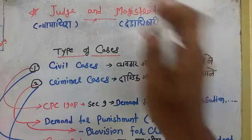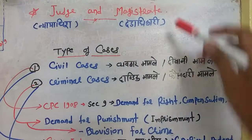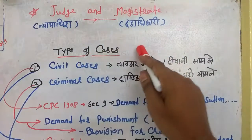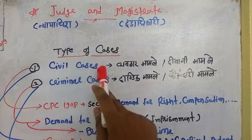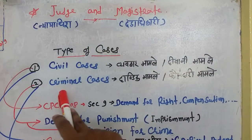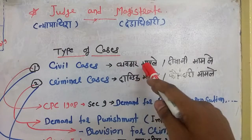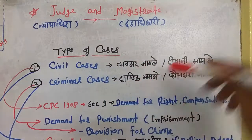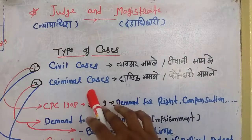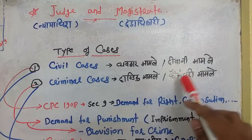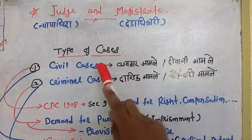Judge, which we call in Hindi, and magistrate, which we call 'bandh-dari kari'. There are two types of cases: civil cases and criminal cases. Civil cases, which we call 'diwani' in Hindi and Urdu. Criminal cases, which we call 'dandik' or 'fauzdari'. So here we understand them.